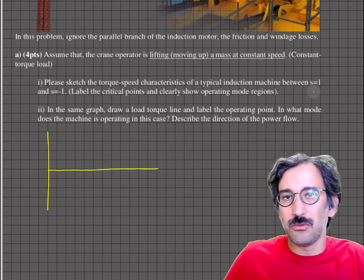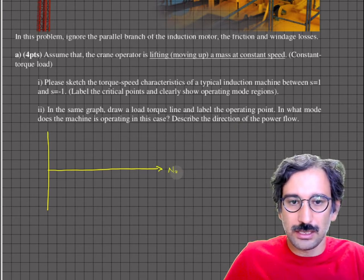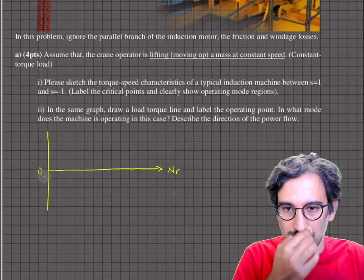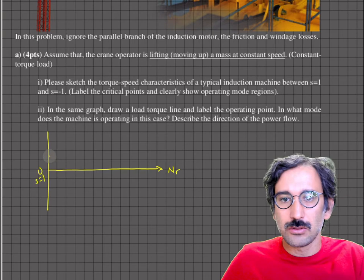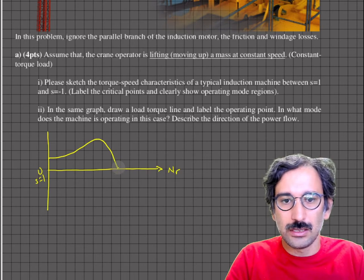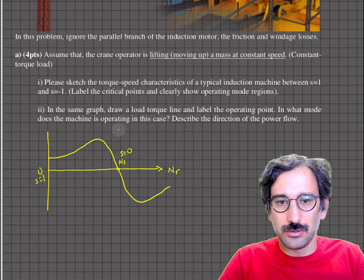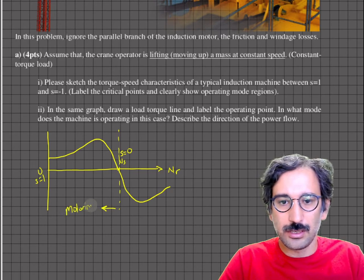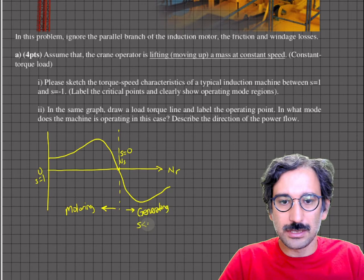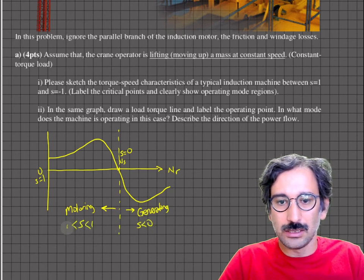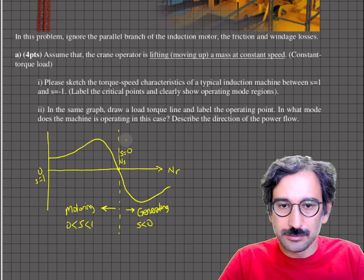The typical torque-speed curve starts at slip equals one, rises to a peak, then comes down to the synchronous speed point where slip equals zero. If we go further into negative slip territory, the curve extends into the generating region. The motoring region is between slip of one and zero, and the generating region is where slip is less than zero.